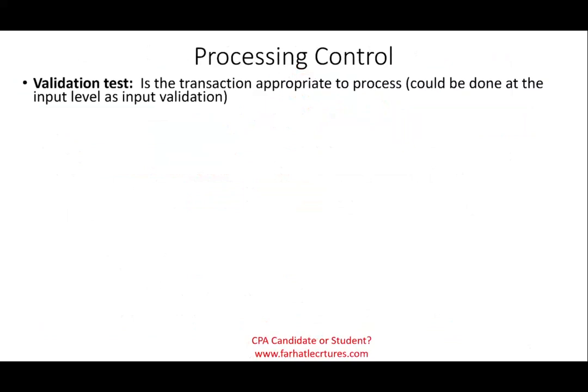One example is the validation test — we also looked at a validation test in input controls. Simply put: is the transaction appropriate to process? So the system, once it starts processing the transaction, if it finds something wrong, it would reject it. For example, when we purchase inventory, if the inventory code item does not match an existing inventory code — if that's not inventory we're supposed to have — then we cannot process the purchase order, because it does not match an existing inventory item. This is called the validation test.